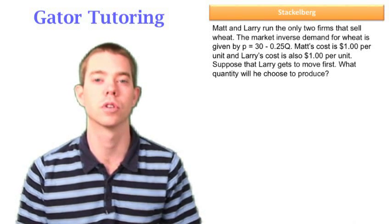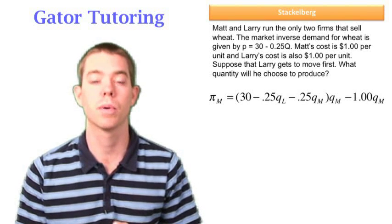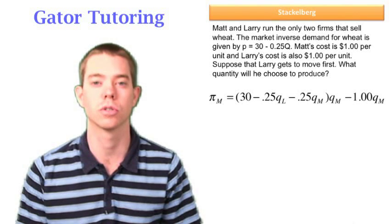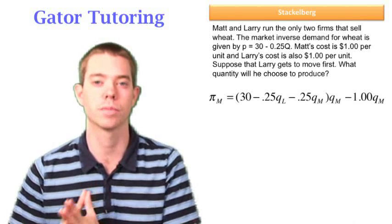Well, if Larry's the first mover, we want to start with Matt's profit function because we want to find Matt's reaction function, which will tell us how Matt will choose to react given a choice by Larry.